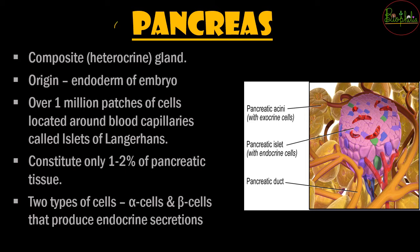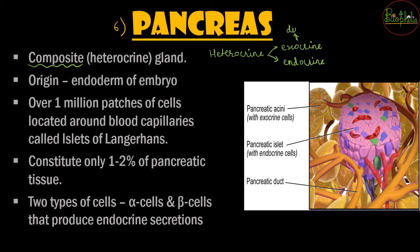Now we are here with the sixth gland, that is pancreas. Pancreas is a bit different from the other glands because it is called a composite or heterocrine gland. Hetero means two different substances are present in it. Heterocrine glands have both exocrine secretion as well as endocrine secretion. Exocrine means the secretions come from a duct, whereas endocrine are ductless secretions.